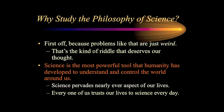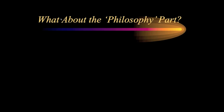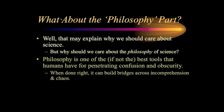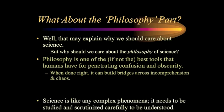Every single one of us trusts our lives to science in multiple ways every single day — from engineering, to medicine, to physics, to biology, and all sorts of other respects in which we obviously trust and depend on science. It makes sense that we should try to figure out how science works. Maybe that explains why we should study science, but why should we study the philosophy of science? Philosophy is one of, if not the, best tool that human beings have for penetrating confusion and obscurity. If you do it right, if you think clearly, philosophy can build bridges across incomprehension and chaos — a phrase I'm stealing from Tom Stoppard. When done wrong, of course, philosophy can become horribly confusing and make a complex problem all the worse. But that's a problem for bad philosophy, not philosophy itself.